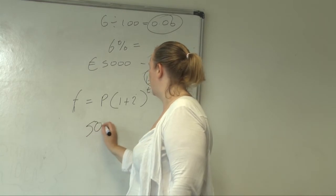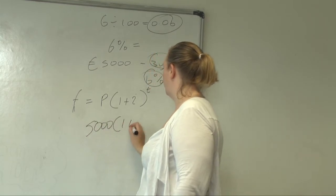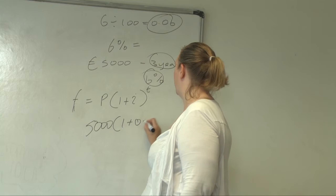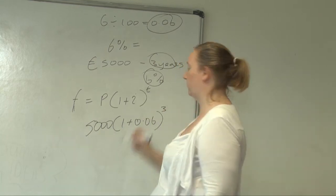So, 5,000 bracket 1 plus instead of I is 0.06 bracket and instead of T is 3.